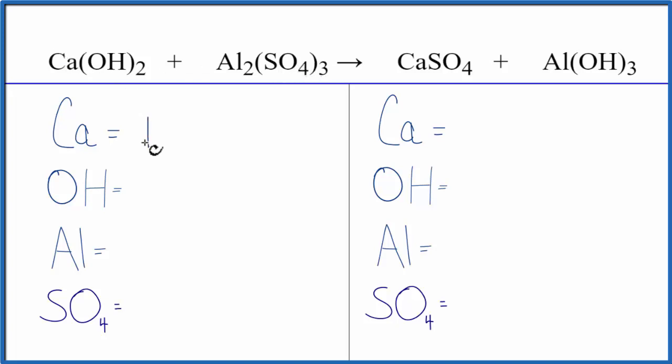We have one calcium atom, and then we have this OH. It's a polyatomic ion. It's here, and it stays together in this reaction. So we can count this as just one item. We have two times the one hydroxides. That'll make this a lot easier to balance.